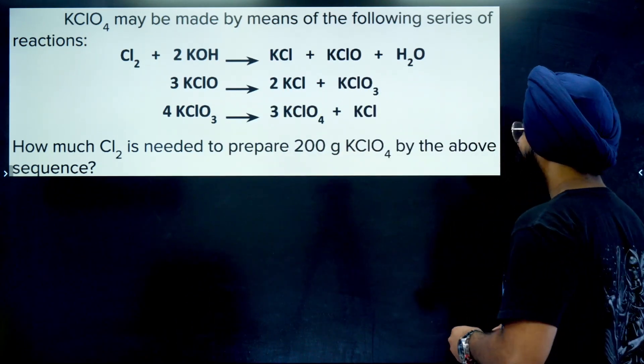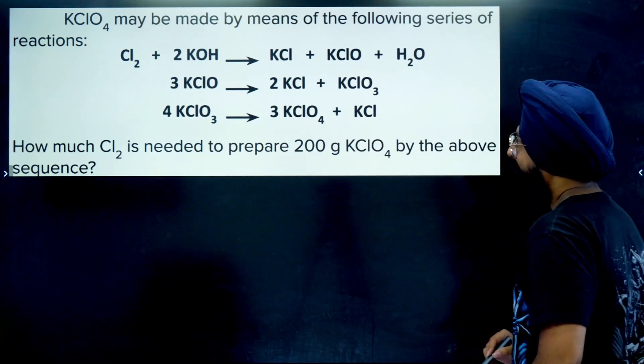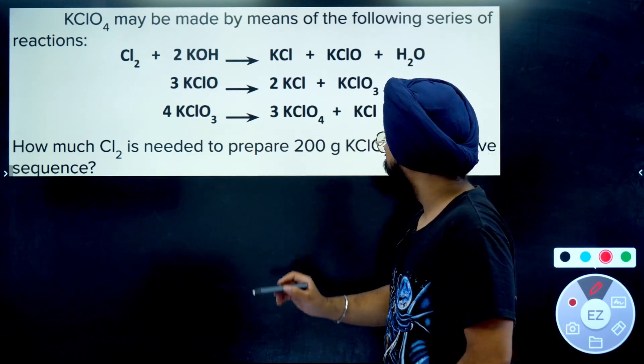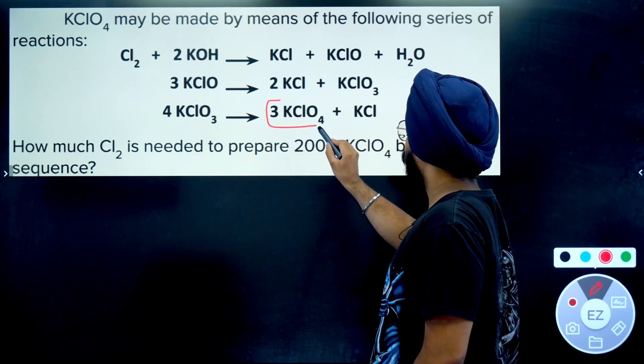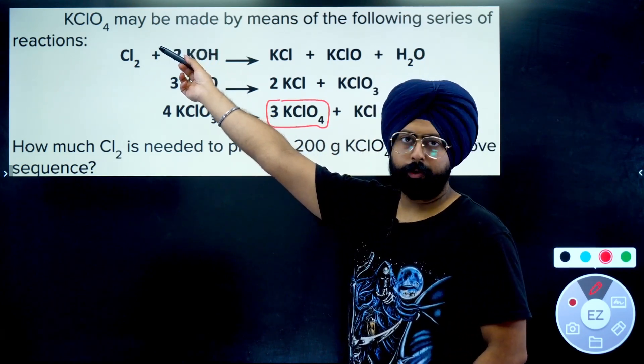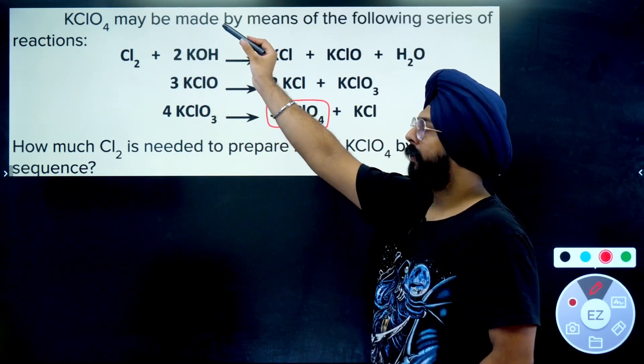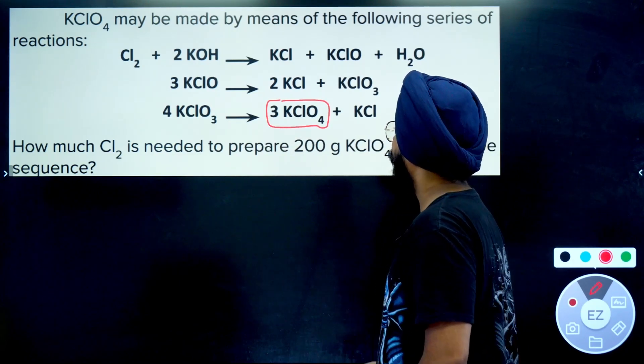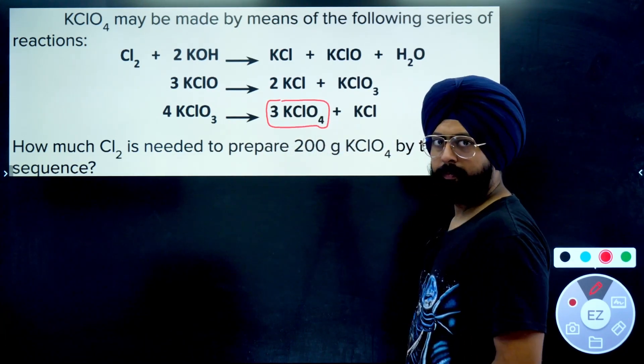Now what do we do? Very simple. Let's focus on KClO₄. Always follow bottom-up approach. Start from the bottom, go to the top. 3 moles of KClO₄ are formed by 4 moles of KClO₃.